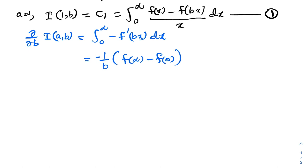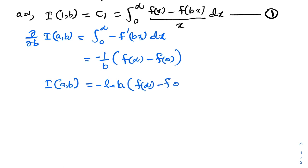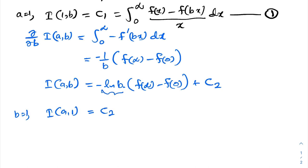Integrating with respect to b, I(a,b) equals minus ln(b) times [f(infinity) minus f(0)] plus constant C₂. When b equals one, ln(1) equals zero, so I(a,1) equals C₂.